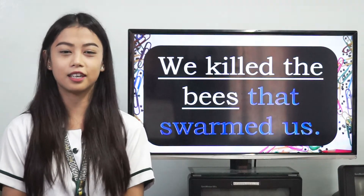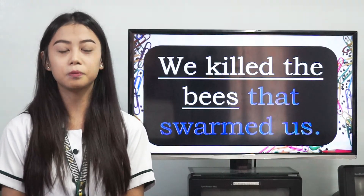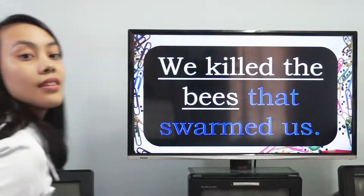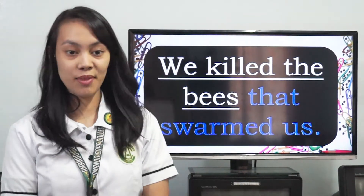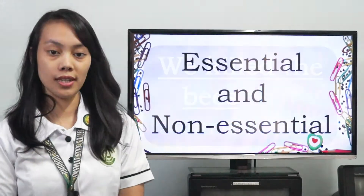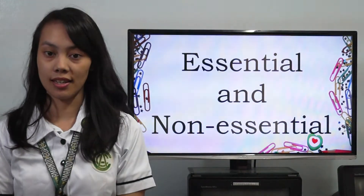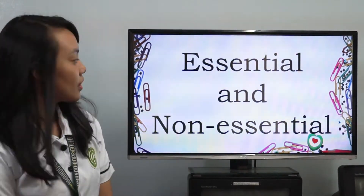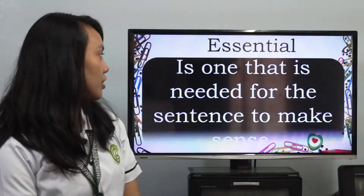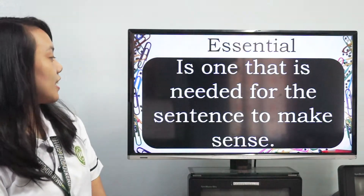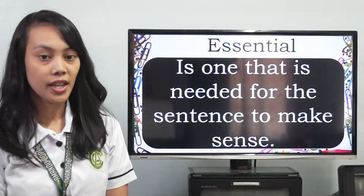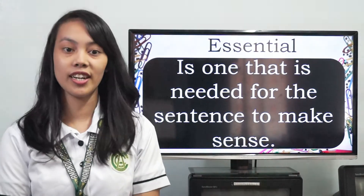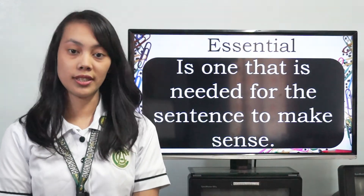Now let's proceed to essential and non-essential relative clause, which will be discussed by my partner Deanne. Hello again, I'm Deanne Brown. In adjective clause, we also have an essential relative clause and a non-essential relative clause. Let's first discuss the essential relative clause. An essential relative clause is one that is needed for the sentence to make sense. It doesn't need to be punctuated because the information in the clause is necessary to understand the meaning of the sentence.